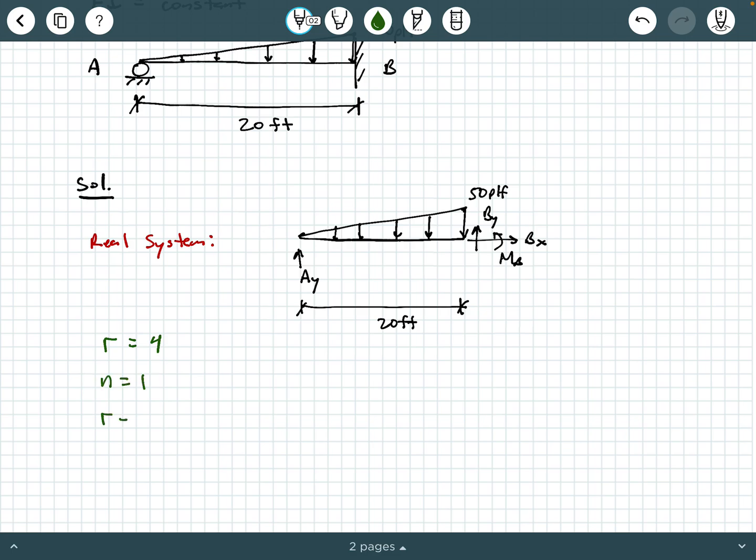And then we can say R minus 3N equals 4 minus 3 times 1, which is 1, and that is what we call the degree of indeterminacy, D sub I.